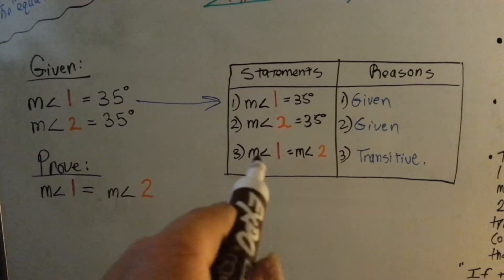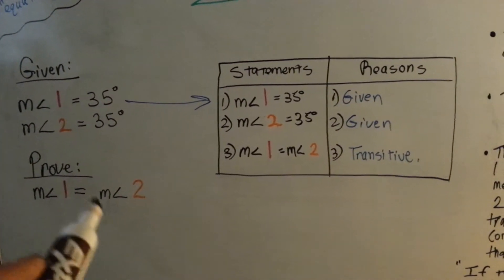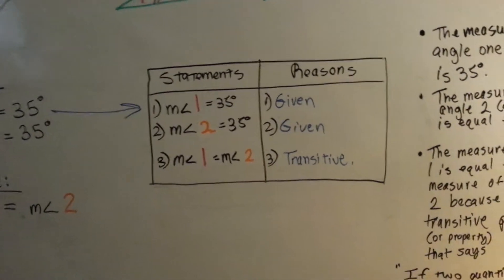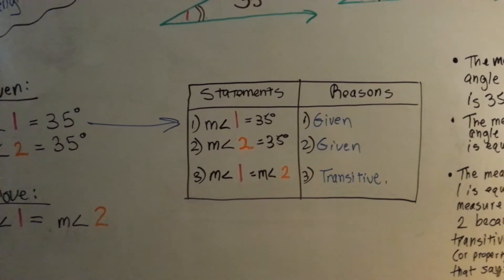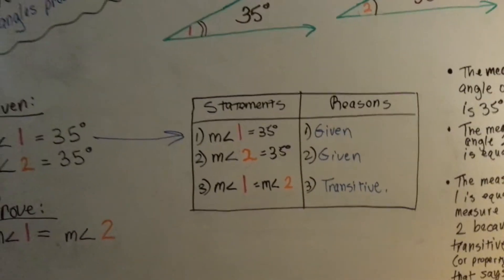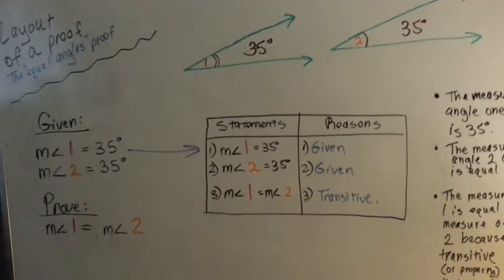And we bring our prove over: the measure of Angle 1 is equal to the measure of Angle 2. Why? Transitive. Just writing that one word is enough to get you an A on your homework. That's enough to get you to pass the GED because it's an acceptable answer.